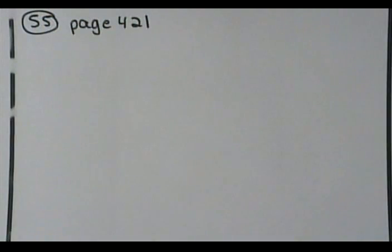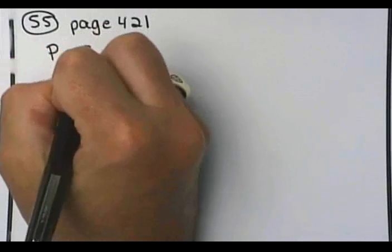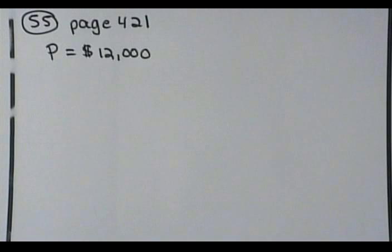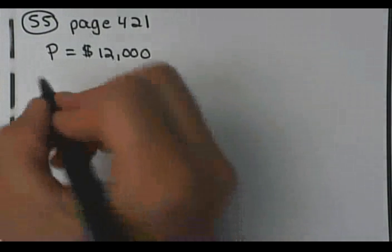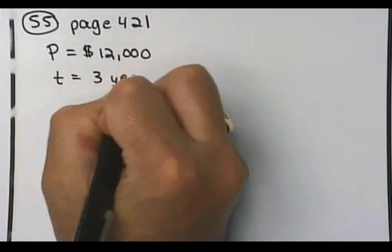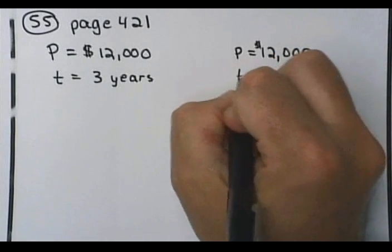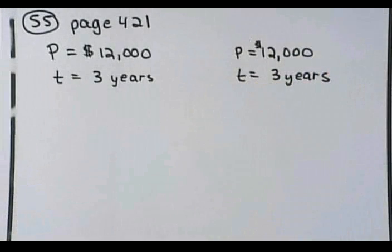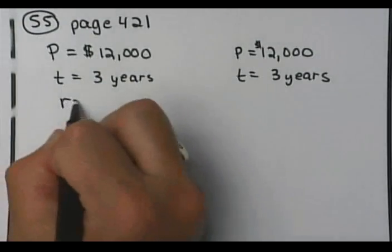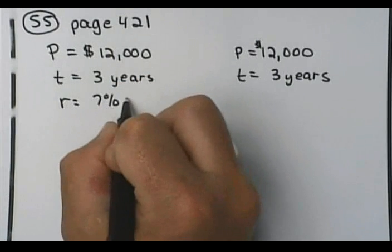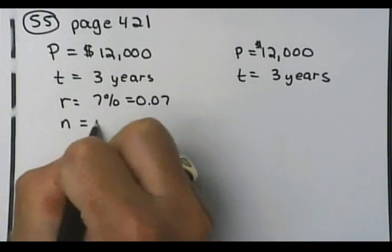Alright, 55. Suppose that you have $12,000 to invest. So I've got a principle here of $12,000. Which investment yields a greater return over three years? So they're telling me that t equals 3 years. And the reason why I'm copying this over is they're wanting to know which yields the best investment. This one with a rate of 7% compounded monthly, where n would equal 12.